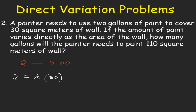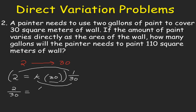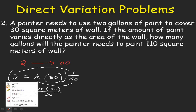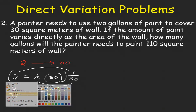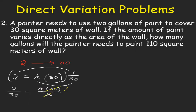We need to find for k. To find for k, we have to cancel out 30. To cancel out 30, divide both sides of the equation by 30. So we have 2 divided by 30 equals k times 30 divided by 30. And 30 divided by 30 is 1. So 2 divided by 30 gives us 0.067. Our k is 0.067.